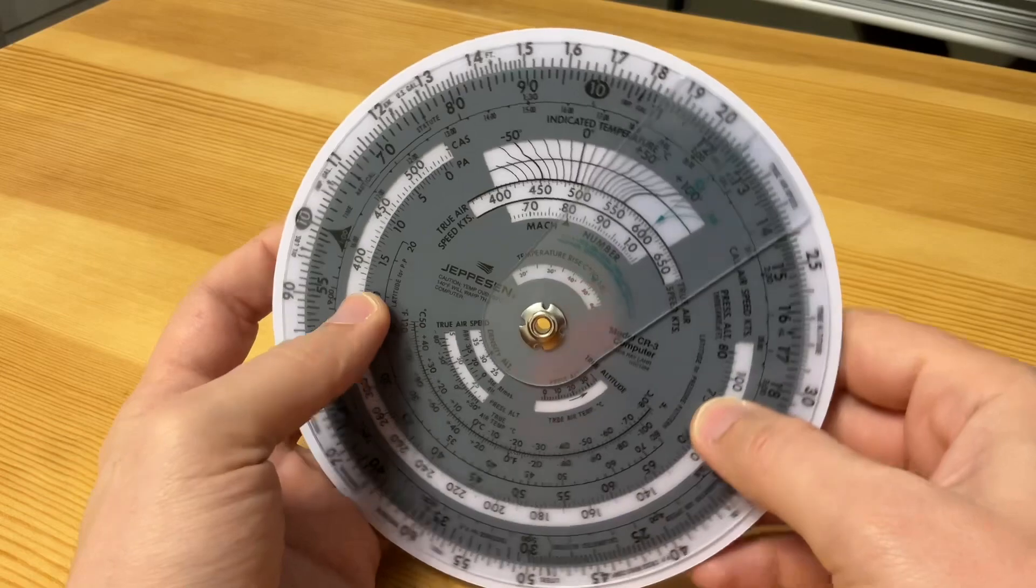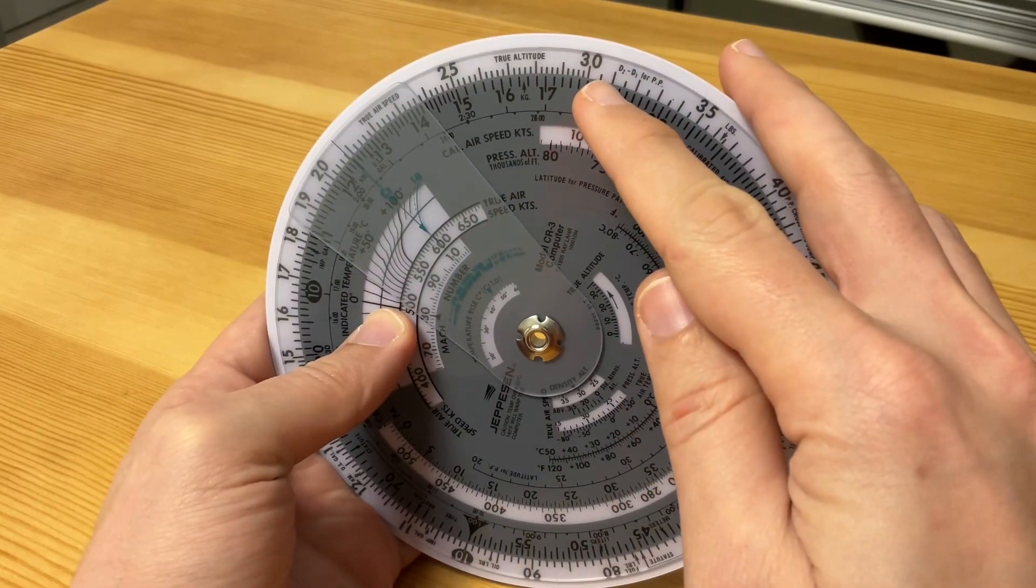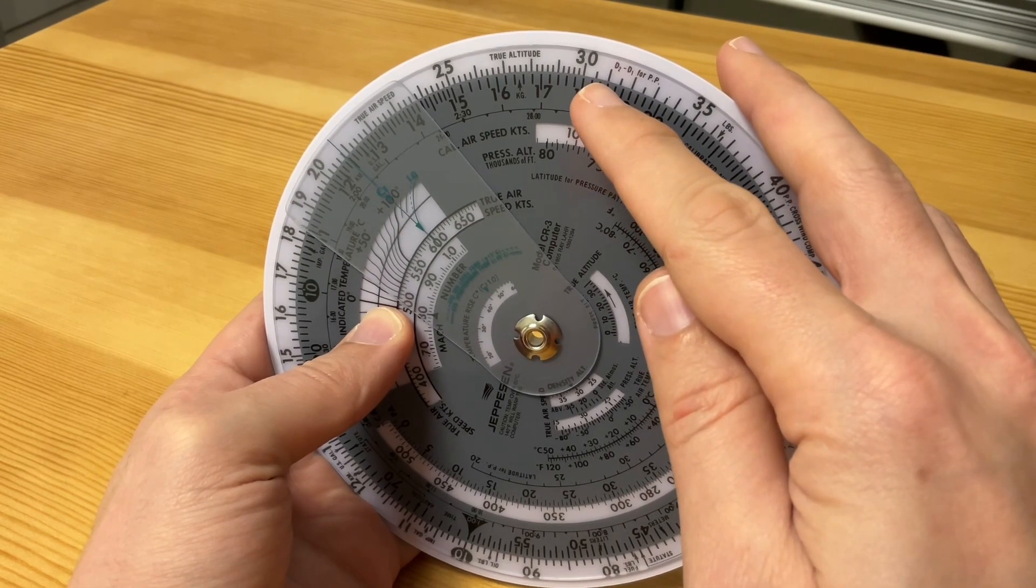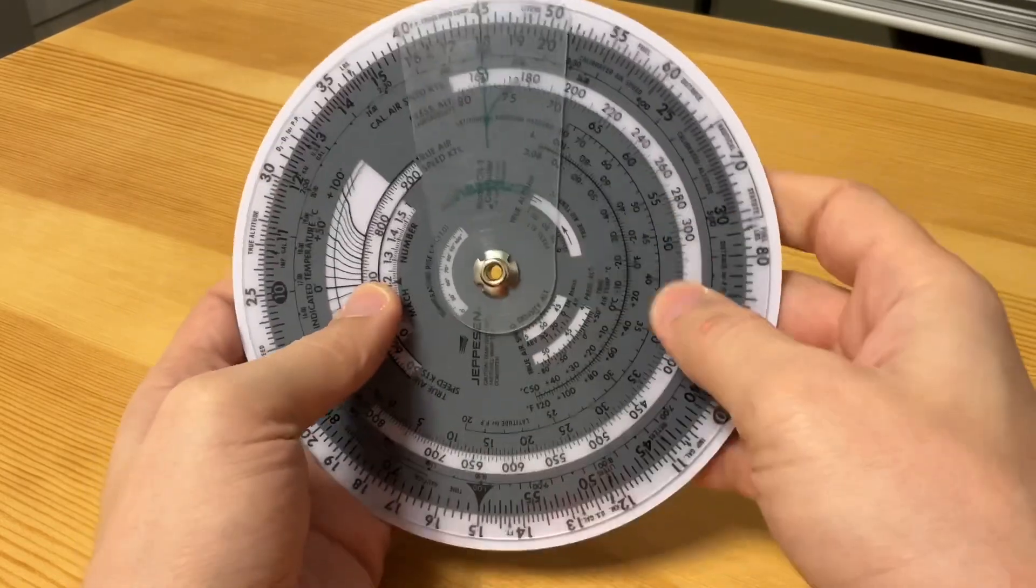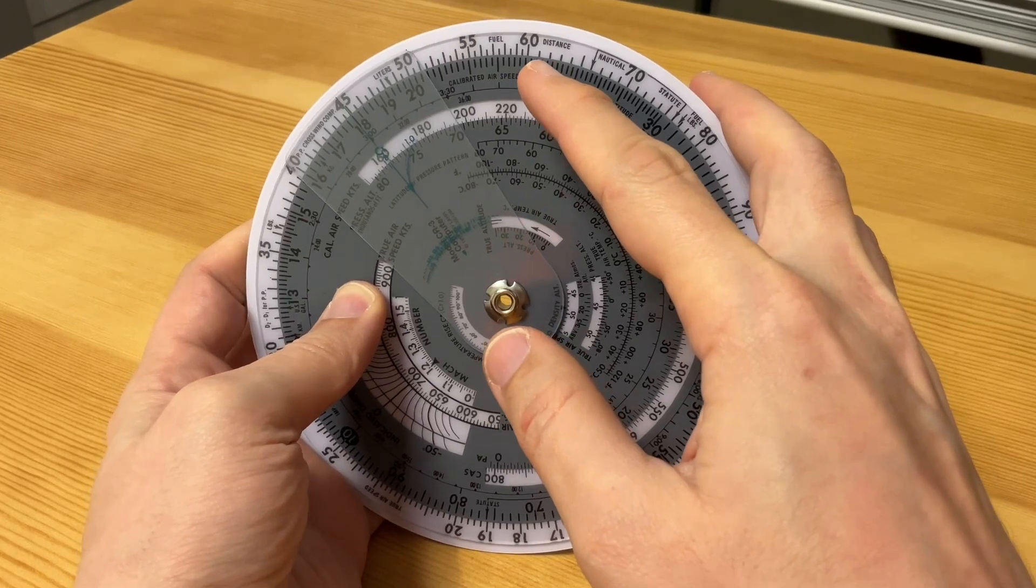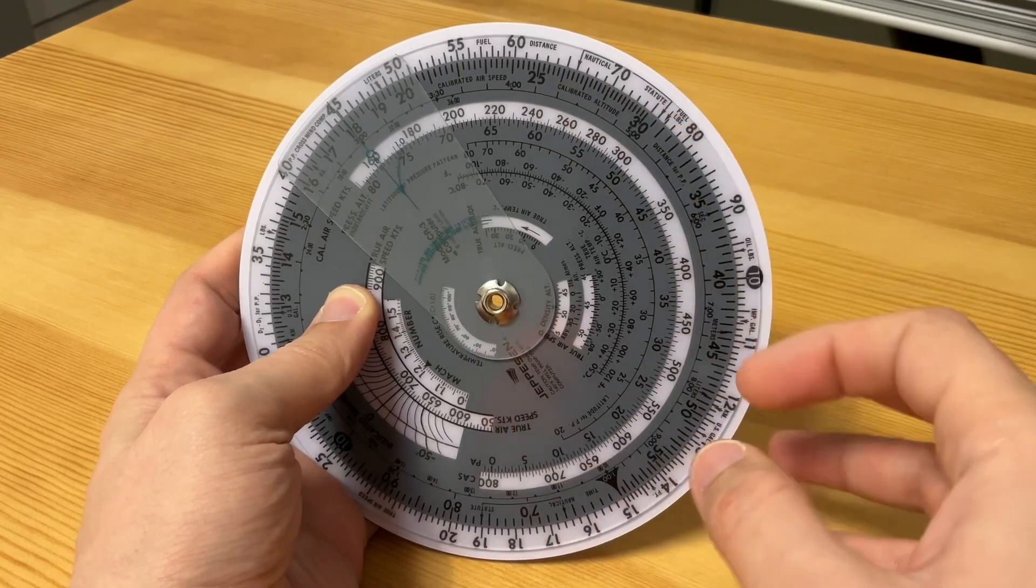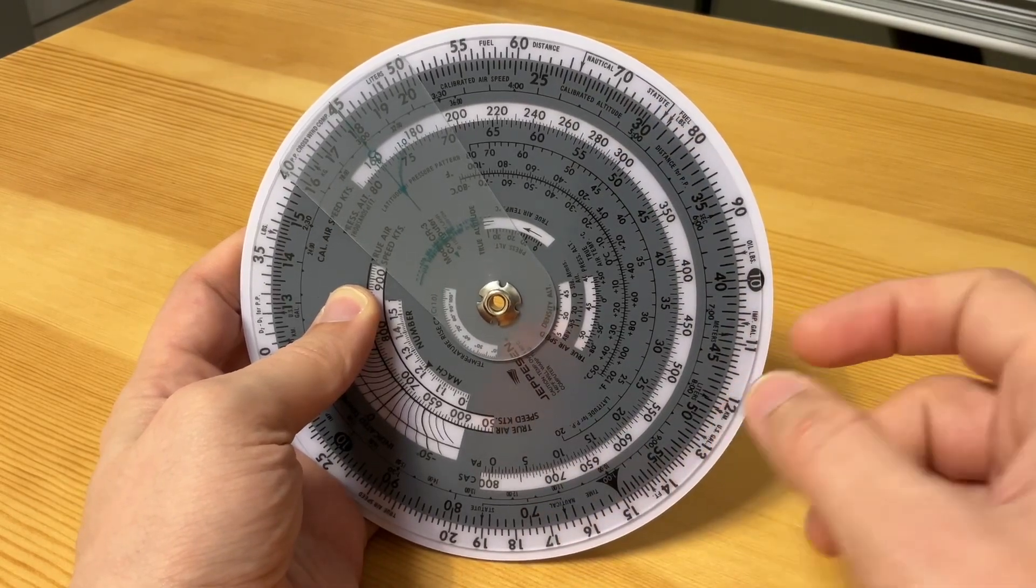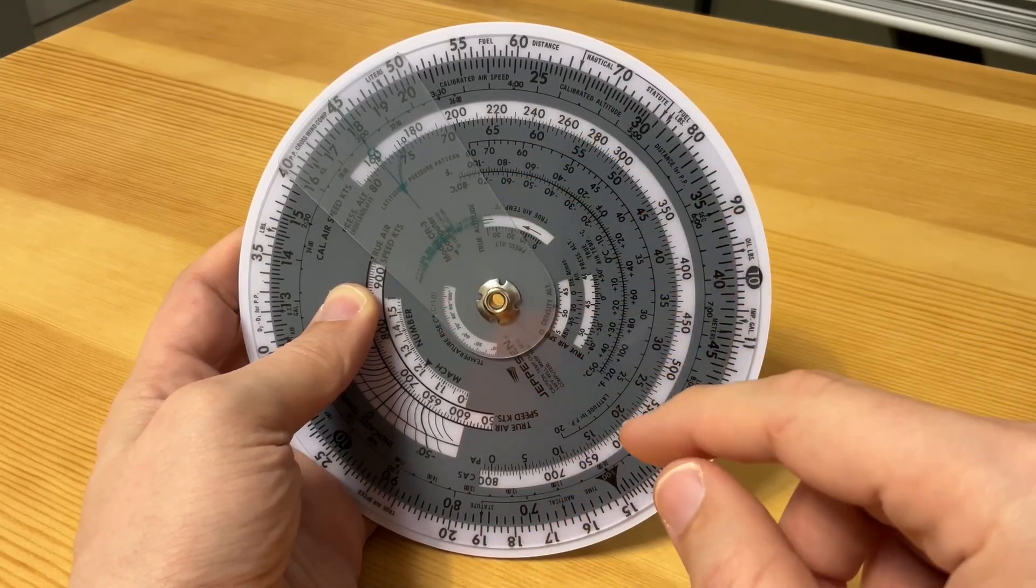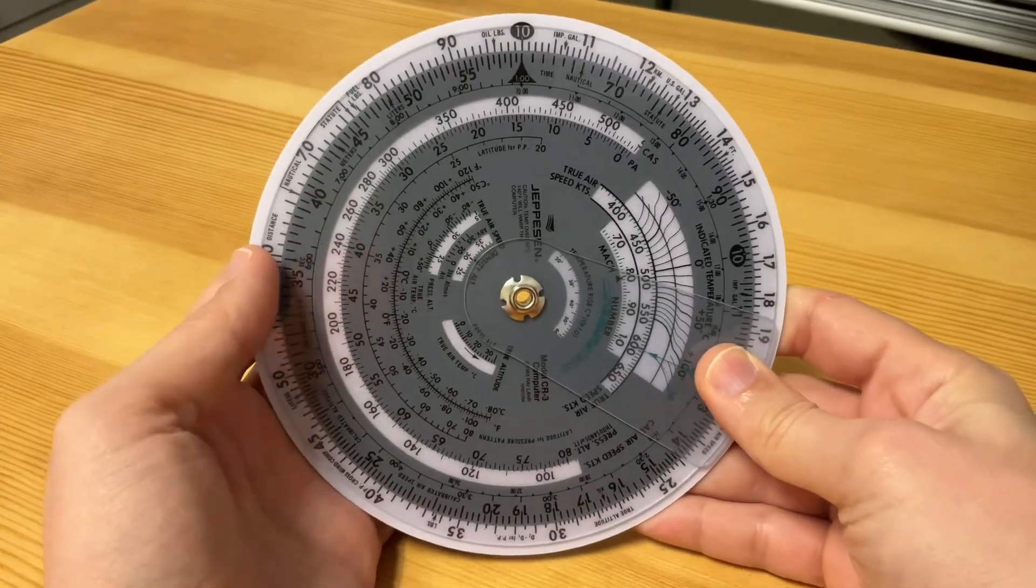The spacing changes again at the number 30. If you look here, it starts to change in 0.5 increments, and at 60 the increment changes to 1: 61, 62, 63. The scale changes as the number increases.